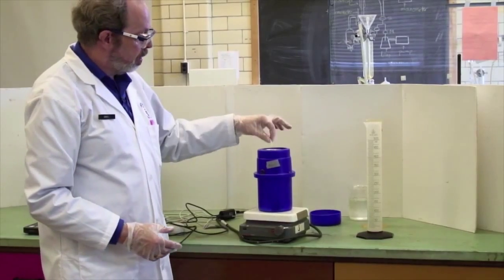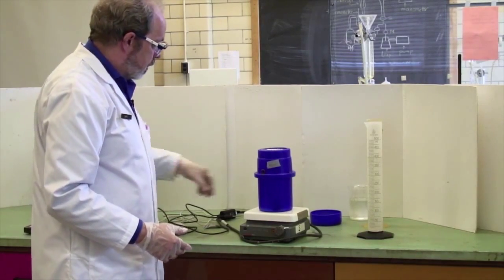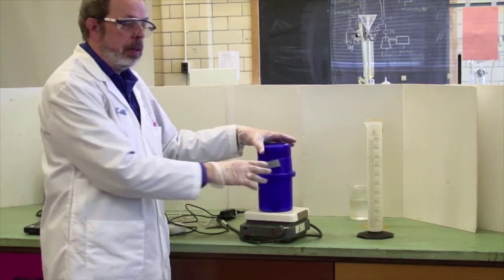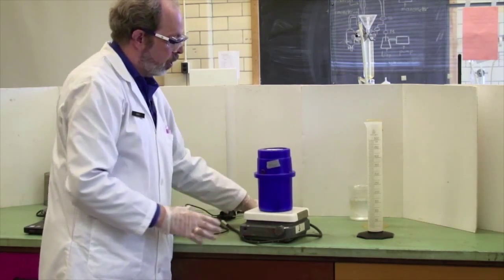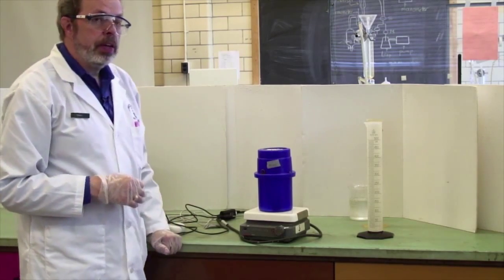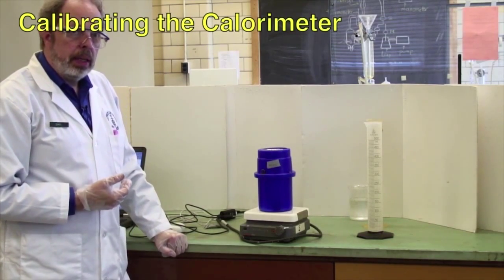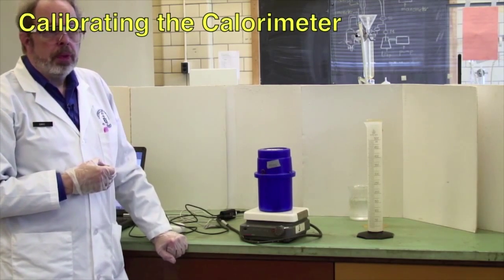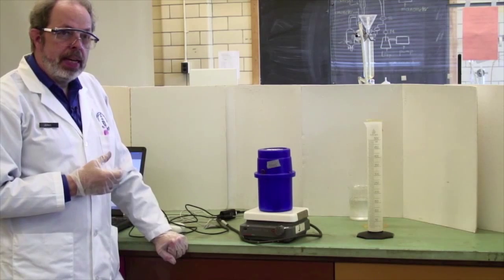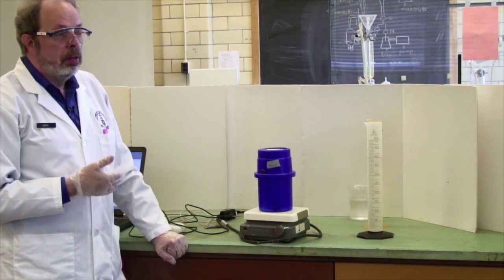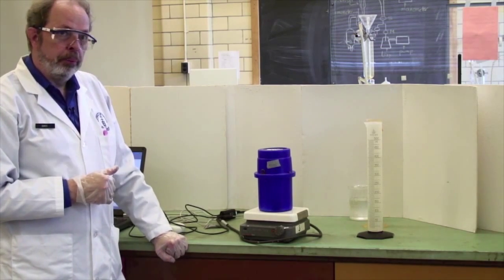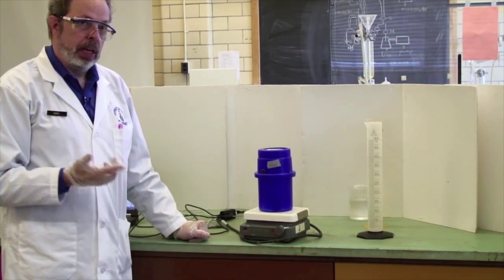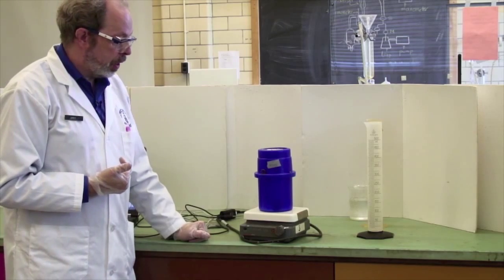The calorimeter is just a dewar flask. You should have a magnetic stir bar inside it. And when it's actually operating, we put a lid on it so that there's minimal heat loss to the environment. We're actually going to calibrate the calorimeter using hot and cold water. We know how much energy it takes to heat up a gram of water, 4.18 joules per Kelvin. However, we're not sure how much energy it takes to heat up the calorimeter. And that's what you need the calibration for.